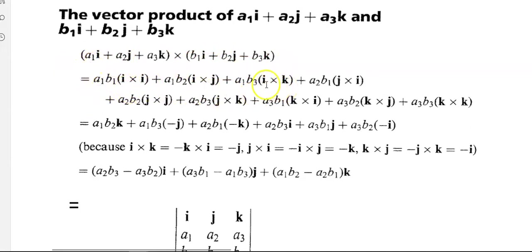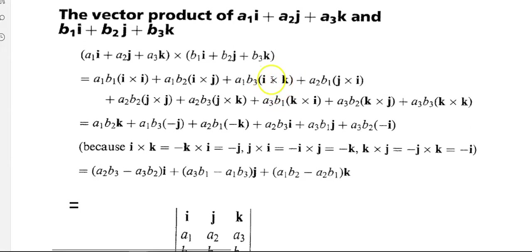Now we look at what those become. i cross i disappears because it's zero. You're left with i cross j, and i cross j equals k, so that gives a1b2 times vector k. And a1b3 with i cross k — that's not in alphabetical order, so it gives minus j. That's where those terms come from.